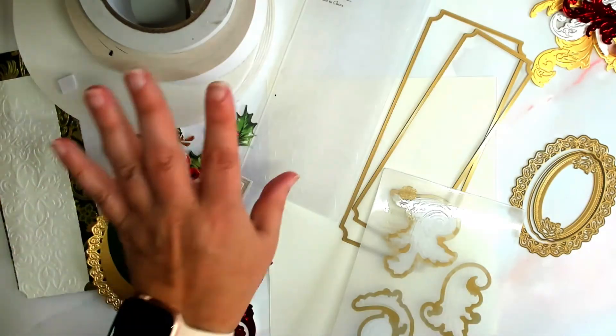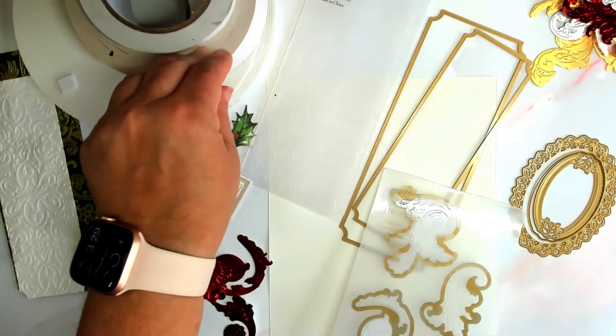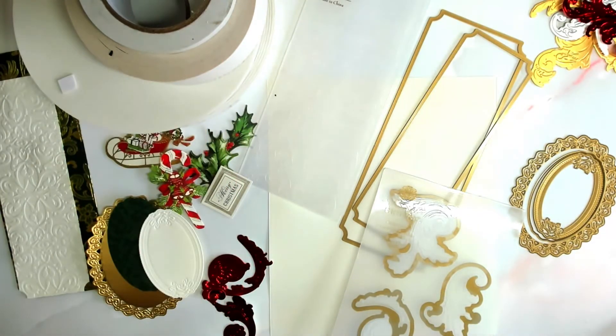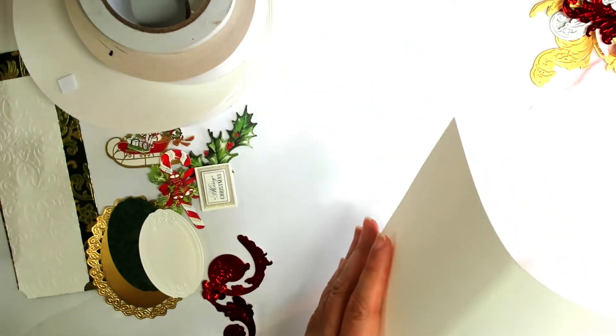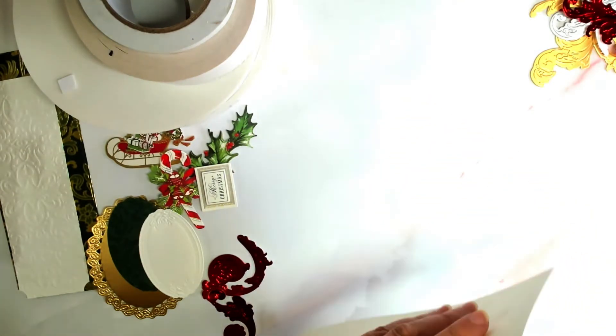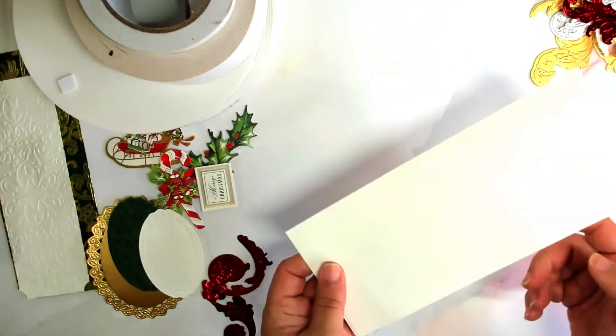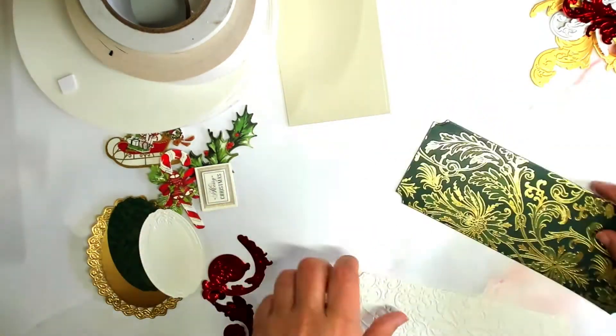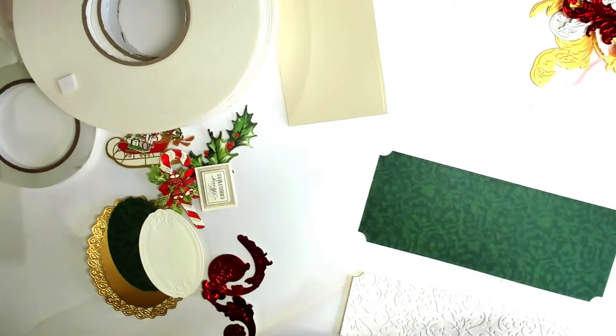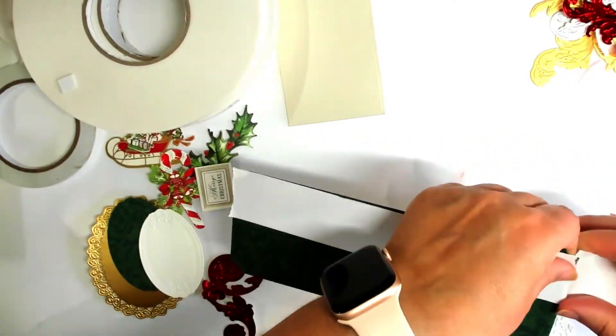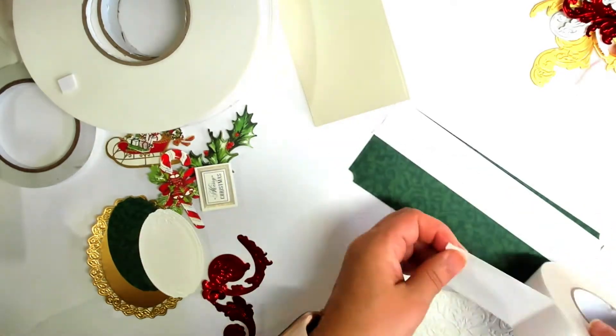When assembling this card, I used an array of different sizes of double-sided adhesive and foam tape. The full list of the adhesives is in the description below. I began by creasing the base of my slimline card with a bone folder, and then adhered double-sided tape on the back side of my first and second top layers.